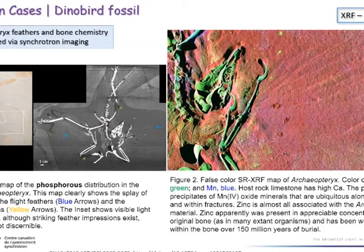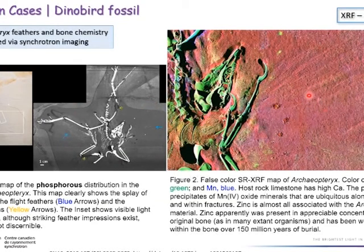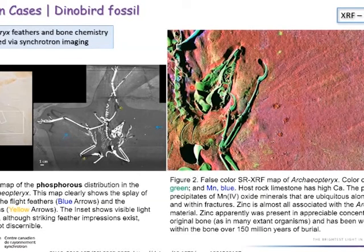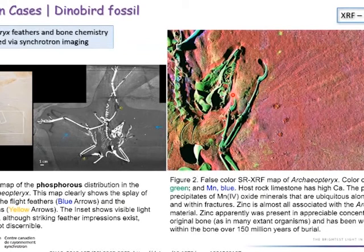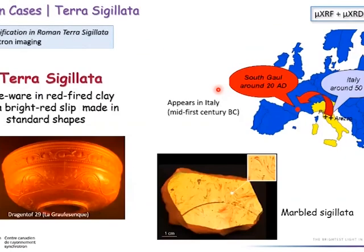Within the white box region of that fossil, we scanned for other elements. The red color indicates calcium, the green is zinc, and the bluish color is magnesium. The host limestone is high in calcium, as expected. But notice the green zinc distribution — it falls within the bone structure. This zinc was originally in the bone and has been preserved for hundreds of millions of years — a remarkable example of elemental preservation in fossils.